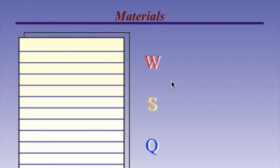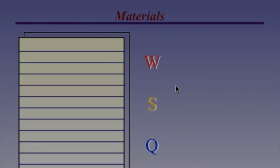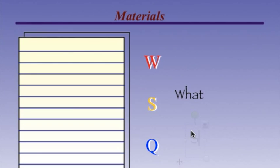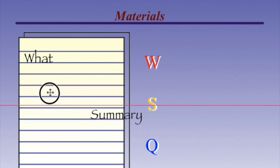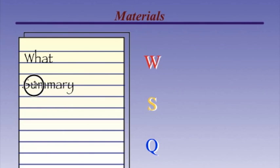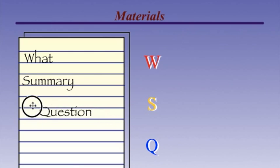It's called a WSQ. And what you need to do on this WSQ is: what did you learn? You need to give a summary, and you need to question. And what that means is, when you come into your notebook, you're actually going to write down what you learned, give a summary of what you've learned, and a question.